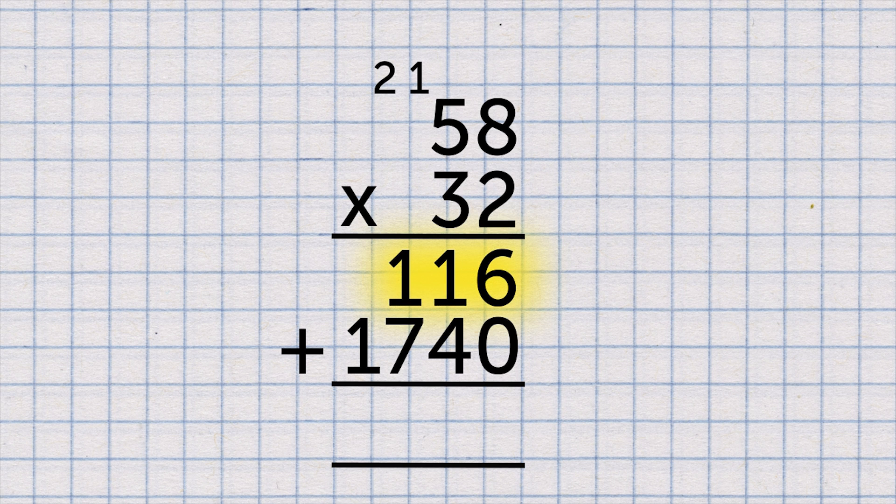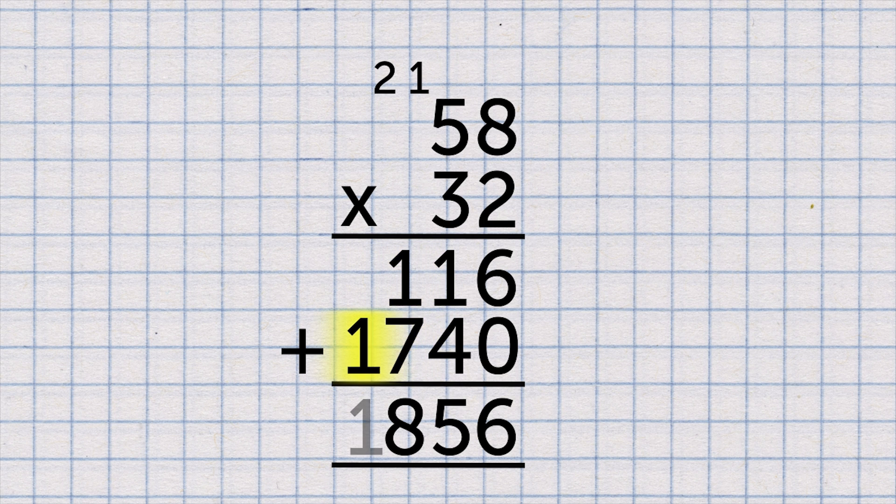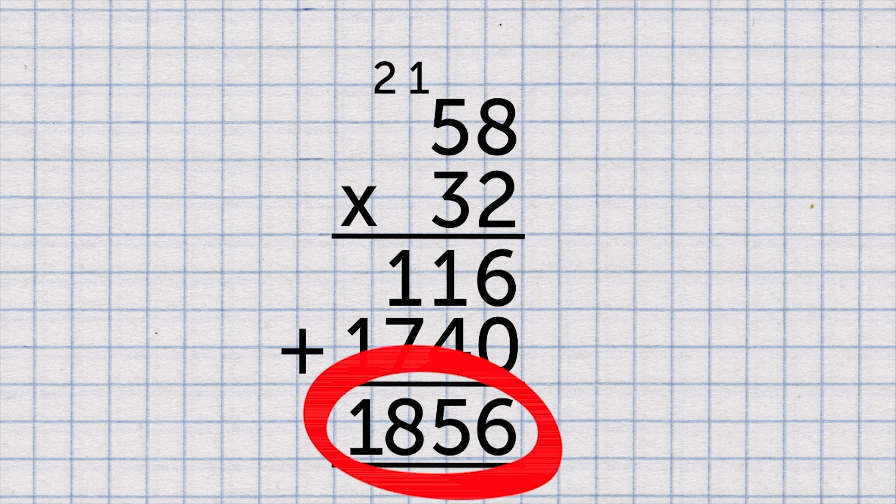Now add up the 2 lots of 58 and the 30 lots of 58 to give 32 lots of 58. 6 and 0 is 6. 1 and 4 is 5. 1 and 7 is 8. 1 and nothing else is 1. 1,856.